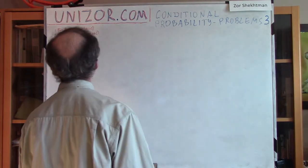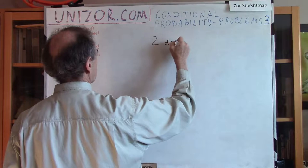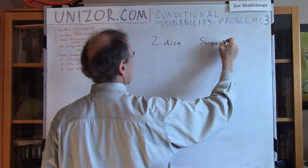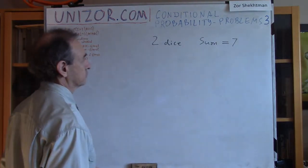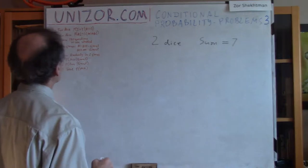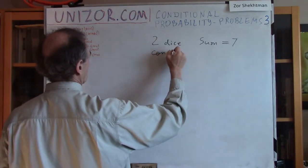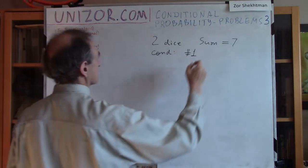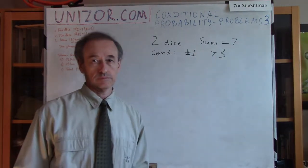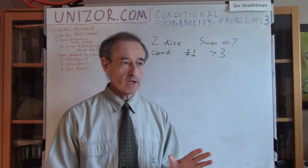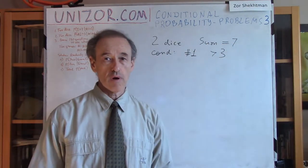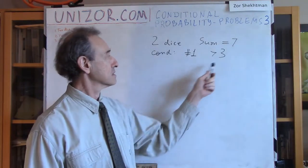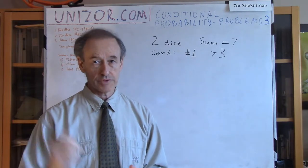Problem number one: You have two dice, and I'm interested in the event that the sum of both dice equals seven, under the condition that the number the first die shows is greater than three — which is four, five, or six.